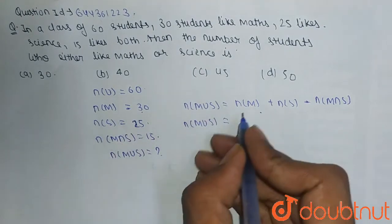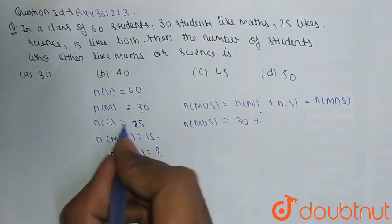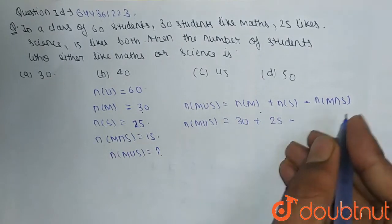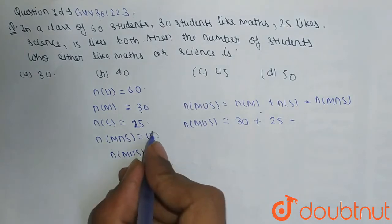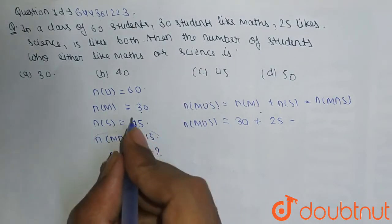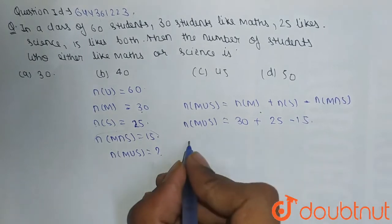n(M) is 30 plus n(S), n(S) is 25, minus n(M∩S). M intersection S means there are 15 which like both maths and science, so minus 15.